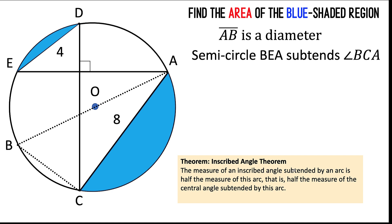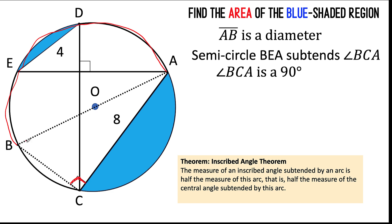the measure of the inscribed angle subtended by the arc is half the measure of that arc. In other words, the measure of this angle is one-half whatever is the measure of the arc that subtends it. Knowing that arc BEA is a semicircle, it follows that the measure of angle BCA must be 90 degrees, because this angle is one-half of 180 degrees, which is the measure of a semicircle. Let's call this angle alpha and this other angle beta. Since the angle BCA is 90 degrees and the sum of interior angles of a triangle is 180 degrees, the sum of alpha plus beta must be 90 degrees.